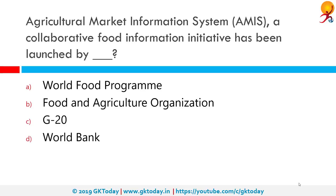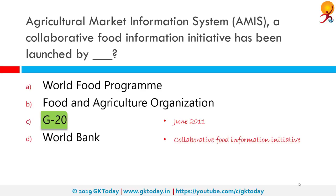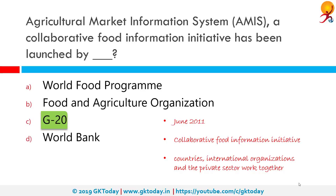The Agricultural Market Information System, or AMIS, is a collaborative food information initiative launched by the G20. In June 2011, the G20 Ministers of Agriculture, recognizing the importance of timely, accurate and transparent information in addressing food price volatility, launched AMIS. It is a platform through which countries, international organizations and the private sector can work together to strengthen synergies and improve data reliability, timeliness and frequency. AMIS will also build developing countries' capacity in market outlook analysis and promote policy dialogue.